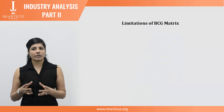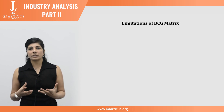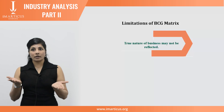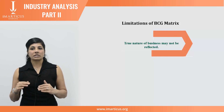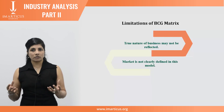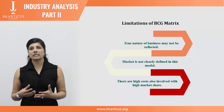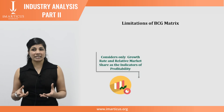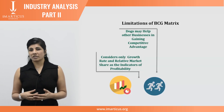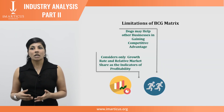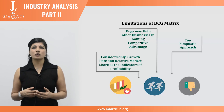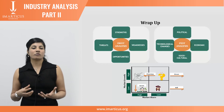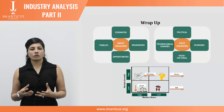The BCG matrix provides a framework for allocating resources among different business units and makes it possible to compare units at a glance. However, it is not free from limitations: it classifies businesses as simply low or high, whereas businesses can also be medium, so the true nature may not be reflected. Markets are not clearly defined in the model. High market share does not always lead to high profitability, as there are high costs involved. Dogs may sometimes help other businesses gain competitive advantage and can even earn more than cash cows. This four-cell approach is considered too simplistic — much like the SWOT, the BCG is a great icebreaker but cannot be considered viable enough for full corporate strategy formulation.